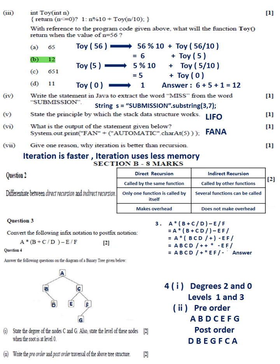Question 4 Part 2: Pre-order traversal: A, B, T, C, E, F, G. Post-order traversal: D, B, E, G, F, C, A.